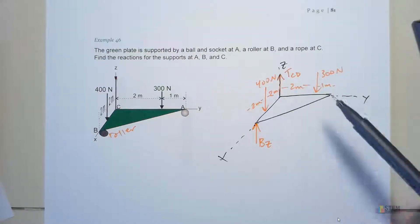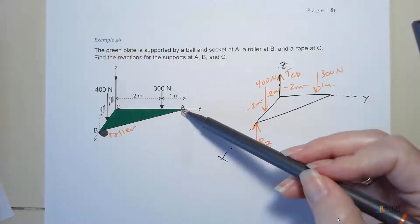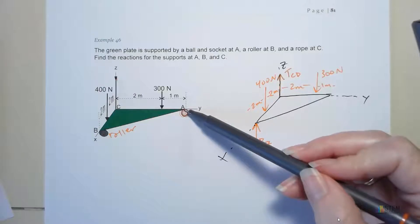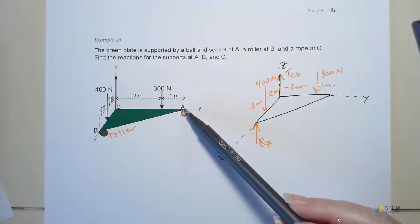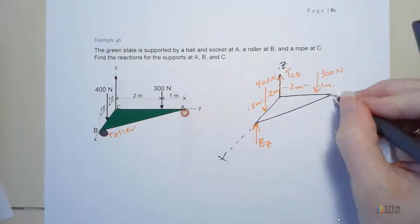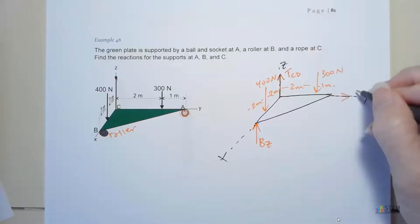Now our ball and socket. Remember what a ball and socket is. We've got an attachment with an outer sphere. There's a ball inside here attached to the plate. A ball and socket will allow rotation in all directions but doesn't allow any translation. That means we're going to have our three forces: AY, AX, and AZ. I'm just assuming these positive directions because that's what I always do. I think it's easiest to assume positive directions.